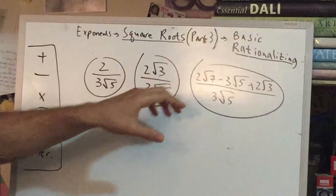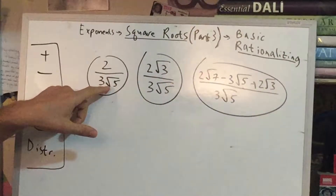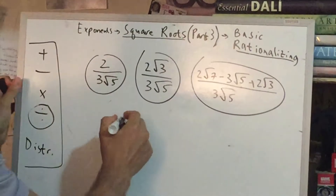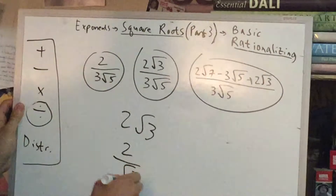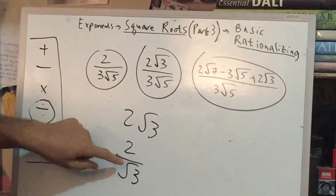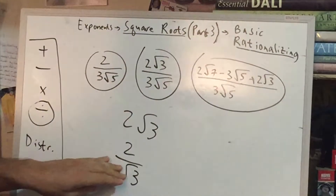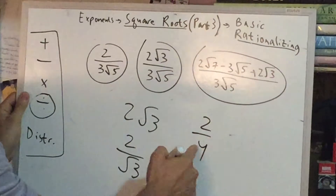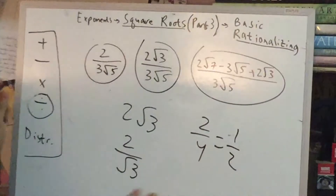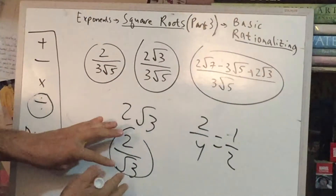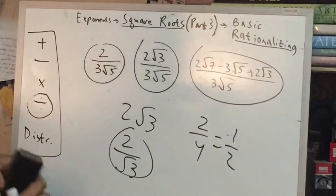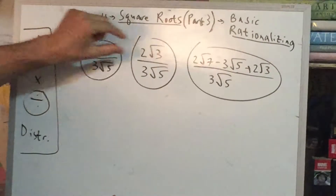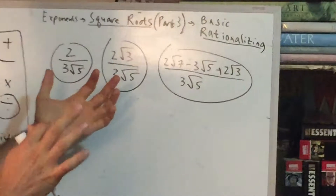Now all these are situations where the top and bottom don't really have a lot in common, and the denominator has a square root. So what does rationalizing refer to? This is referring to getting rid of square roots in the denominator. If you have an answer like this with a square root in the denominator, it's not simplified — just like two-fourths is not simplified. So you want to do some basic rationalizing.